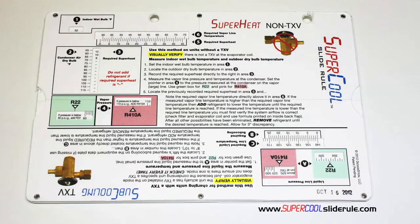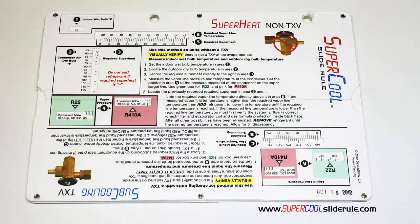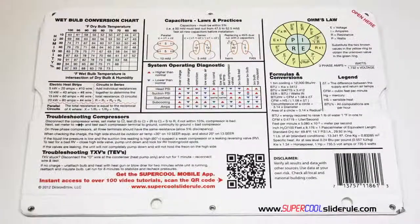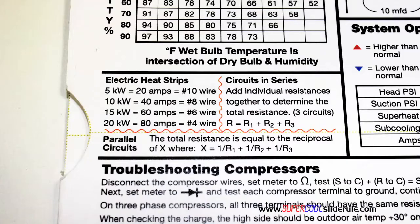This one tool will allow you to charge a system with R22 or R410A in either the superheat or subcooling method. The back cover contains required formulas, capacitor rules and practices, a wet bulb conversion chart, and how to perform computations on series or parallel circuits.